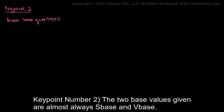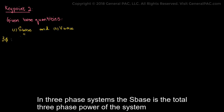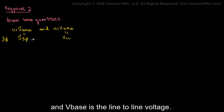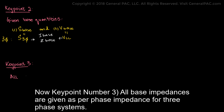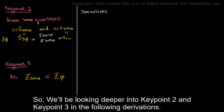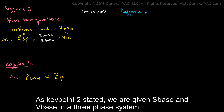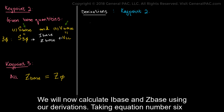Key point number two: the two base values given are almost always S_base and V_base. In three-phase systems, S_base is the total three-phase power and V_base is the line-to-line voltage. These two quantities are used to calculate I_base and Z_base. Key point number three: all base impedances are given as per-phase impedance for three-phase systems. We'll look deeper into key points two and three in the following derivations.